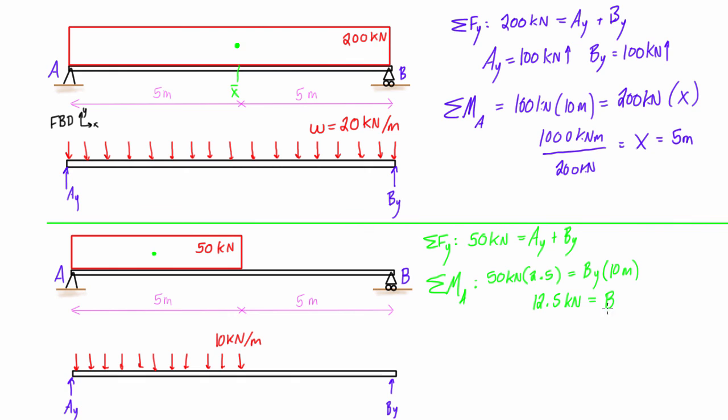Then we just plug that back into here, so we get 50 minus 12.5 is going to give us 37.5 kilonewtons for Ay. I just plugged it back into this equation. So we see that Ay equals 37.5 kilonewtons and By equals 12.5 kilonewtons.